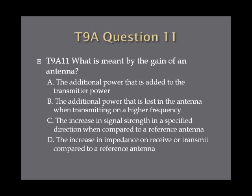Question 11: What is meant by the gain of an antenna? A. The additional power that is added to the transmitter power. B. The additional power that is lost in the antenna when transmitting on a higher frequency. C. The increase in signal strength in a specified direction when compared to a reference antenna. Or D. The increase in impedance on receive or transmit compared to a reference antenna.